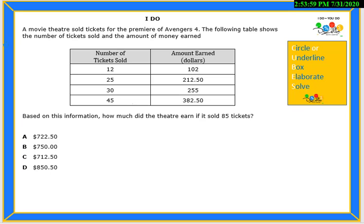A movie theater sold tickets for the premiere of Avengers 4. The following table shows the number of tickets sold and the amount of money earned. Based on the information, how much did the theater earn if they sold 85 tickets?